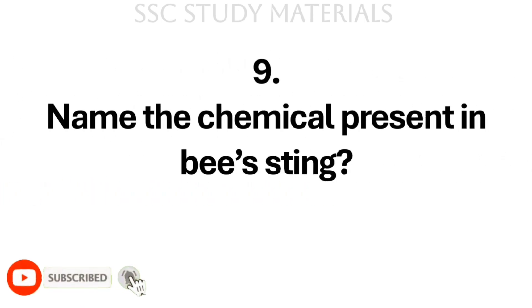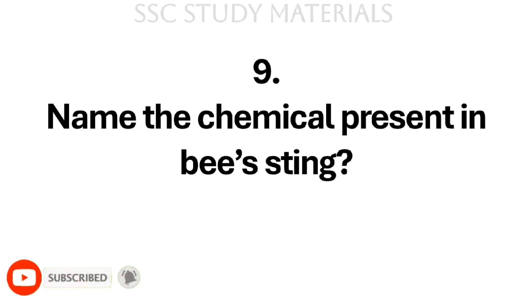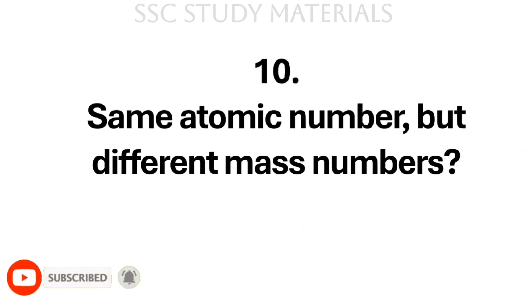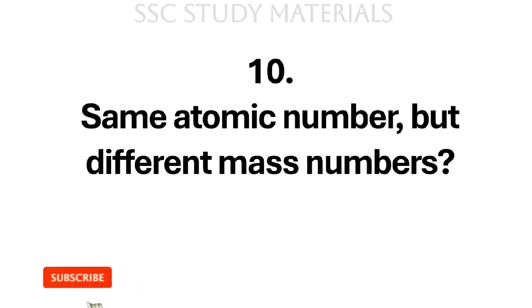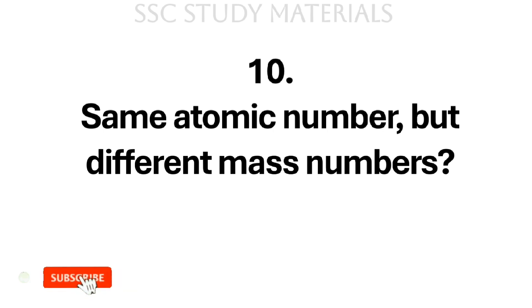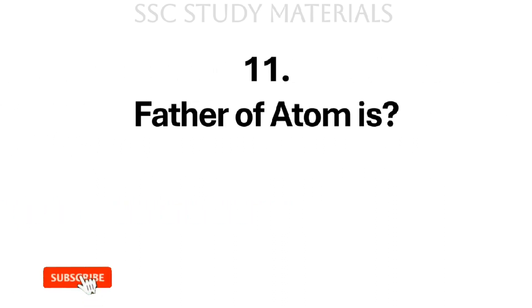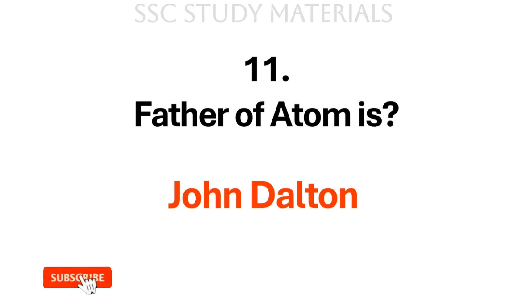Question No. 9: Name the chemical present in bee sting. Answer: The chemical present is histamine. Question No. 10: Same atomic number but different mass numbers? Answer: Isotopes. Question No. 11: Father of atom is? Answer: The father of atom is John Dalton.